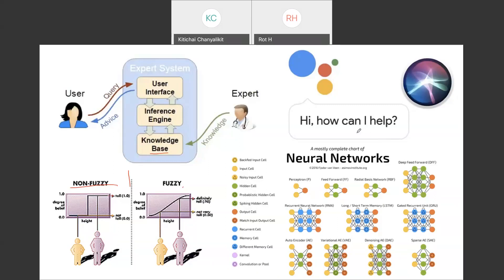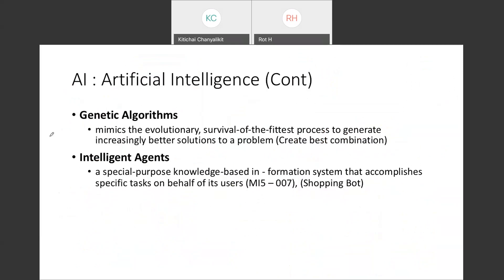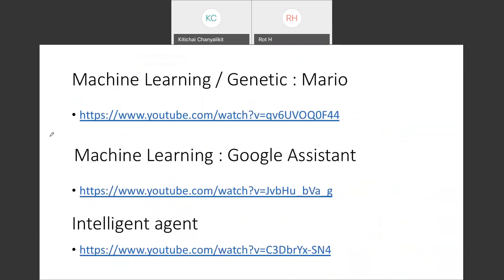For these three AI types, there are YouTube links you can access to see how machine learning, Google Assistant, and intelligent agents work. You can watch those videos to understand machine learning a little better.